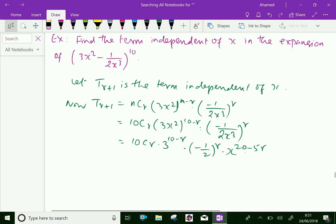Now, for this term to be independent of x, therefore we can put the index of x, 20 - 5r equals 0, which gives r equal to 4.